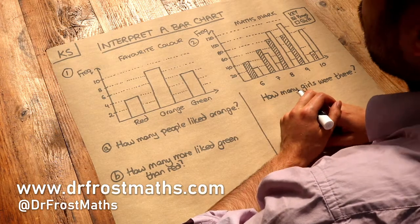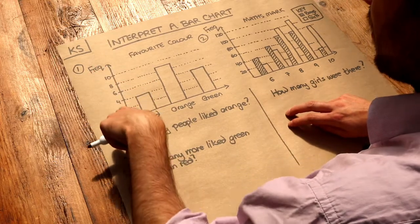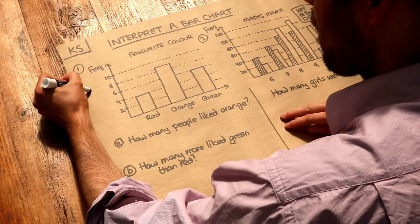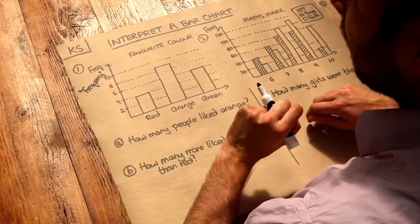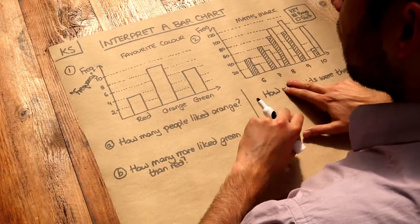Now a bar chart is an example of a frequency diagram, and that means that on this vertical axis we have frequency. Frequency just means how many of that type of thing you have.